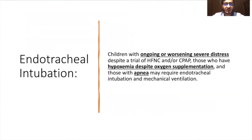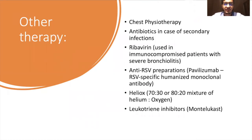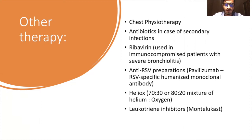Endotracheal intubation is indicated for children with ongoing or worsening respiratory distress, hypoxemia despite oxygen supplementation, and those with apnea. Other therapies include chest physiotherapy, antibiotics if there is suspected secondary infection, ribavirin for immunocompromised patients with severe bronchiolitis, anti-RSV preparations like palivizumab (an RSV-specific humanized monoclonal antibody), heliox administration (either 70/30 or 80/20 mixture of helium and oxygen), and in some cases leukotriene inhibitors like montelukast.